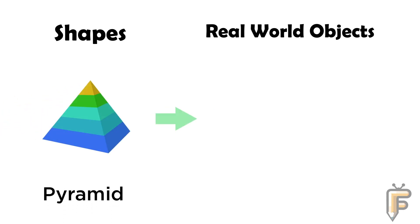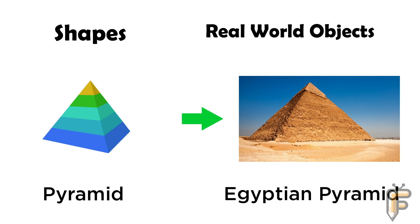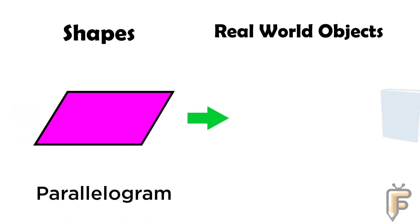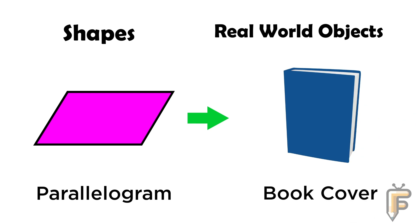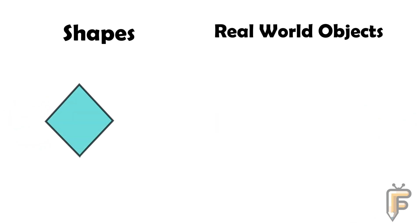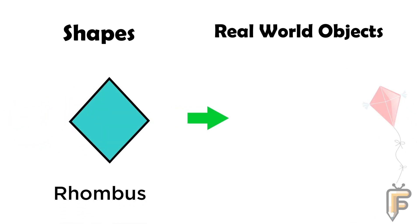Pyramid: Egyptian pyramid. Parallelogram: book cover is parallelogram shape. Rhombus: kite is rhombus shape.